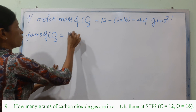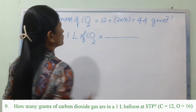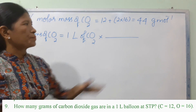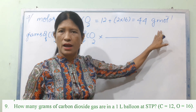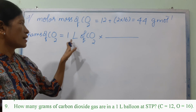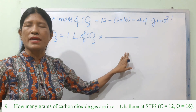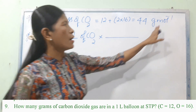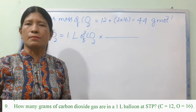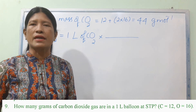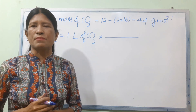1 liter of molar CO2 into 44 grams per mole. 1 liter of CO2 into 44 grams. In this case, we have 1 liter of CO2 into 1 STP.